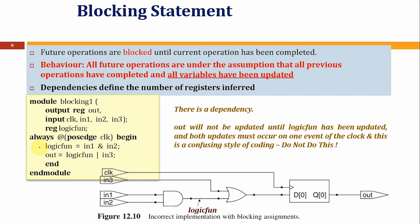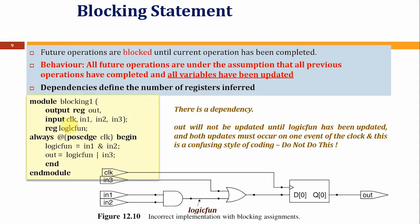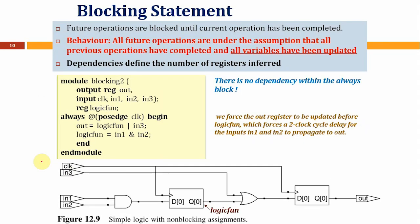Now consider what happens when we swap the two blocking statements: we put the output assignment first (logic_fun AND in3 assigned to out) and the logic_fun assignment second (in1 AND in2 assigned to logic_fun). Even though we are still using blocking statements, if we look at this resulting circuit, a register will be created.